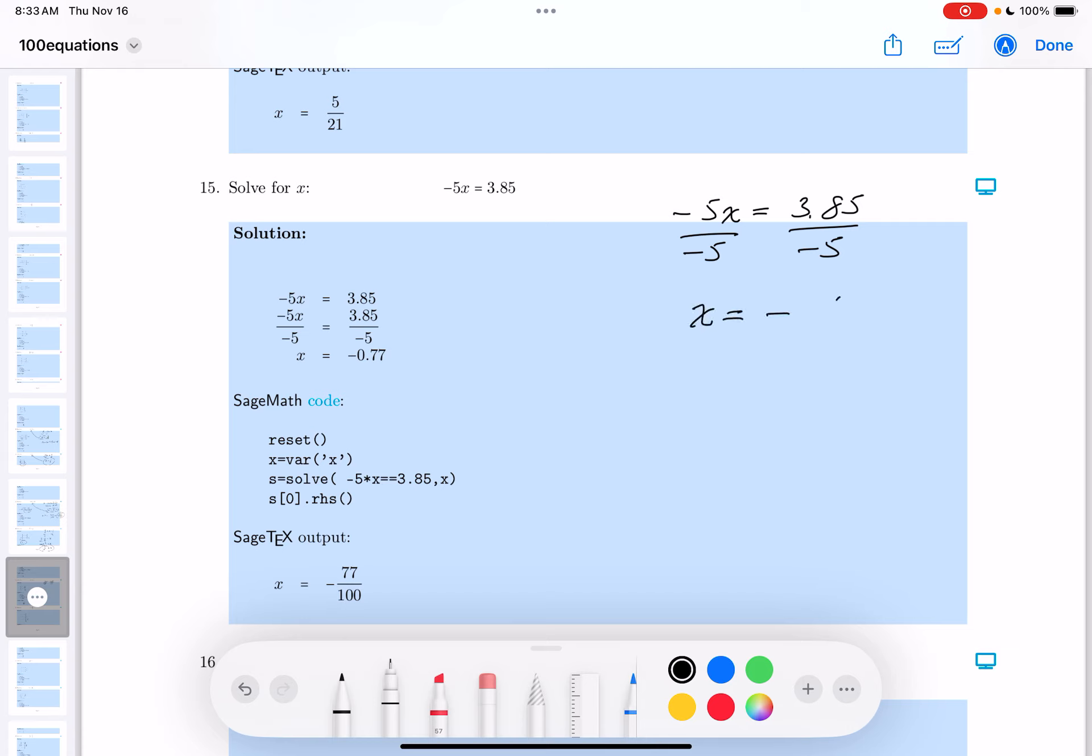X equals minus 3.85 over 5. That's really an inappropriate way to write a number, by the way. So I'd either recommend converting it into a ratio of two integers or a decimal number.